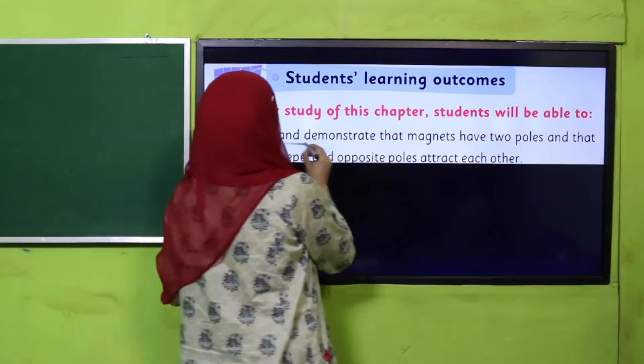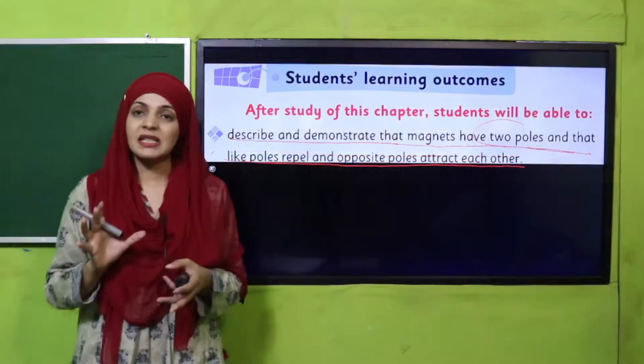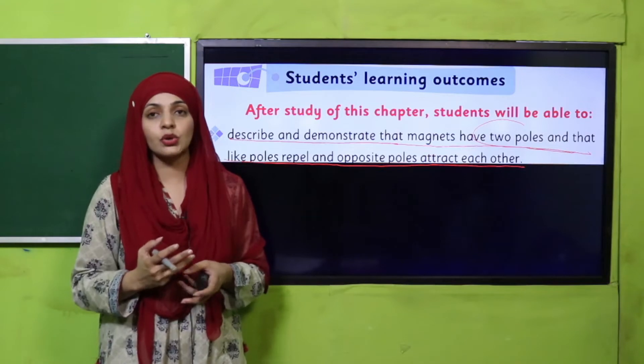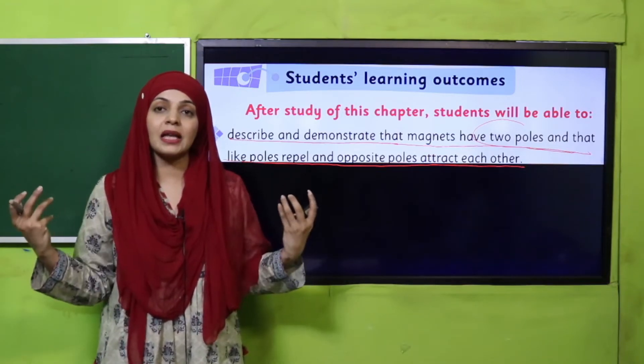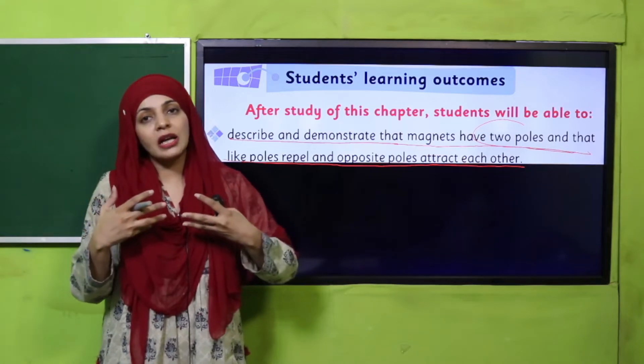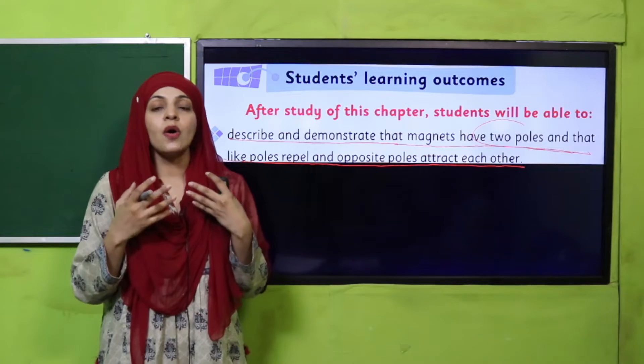Students will be able to describe and demonstrate that magnets have two poles and that like poles repel and opposite poles attract each other. In the previous lecture I told you that magnets have two poles. When like poles come close to each other they repel. When opposite poles come close they attract. Today we will demonstrate this practically.